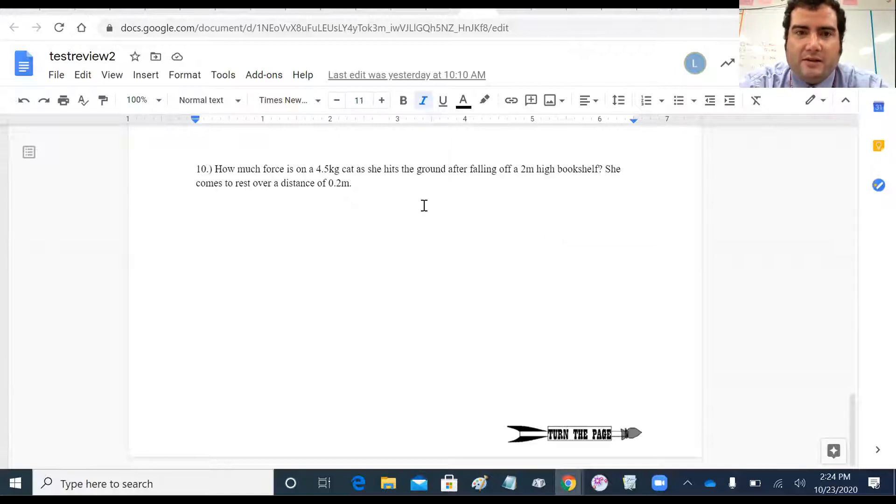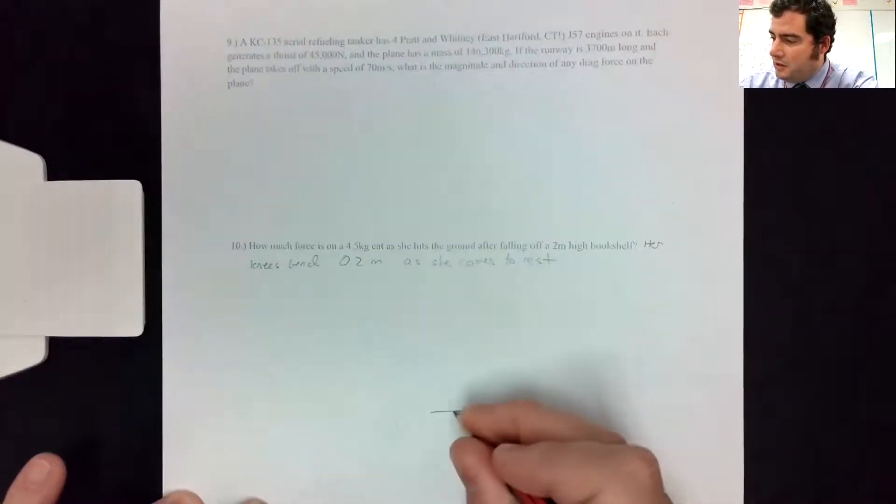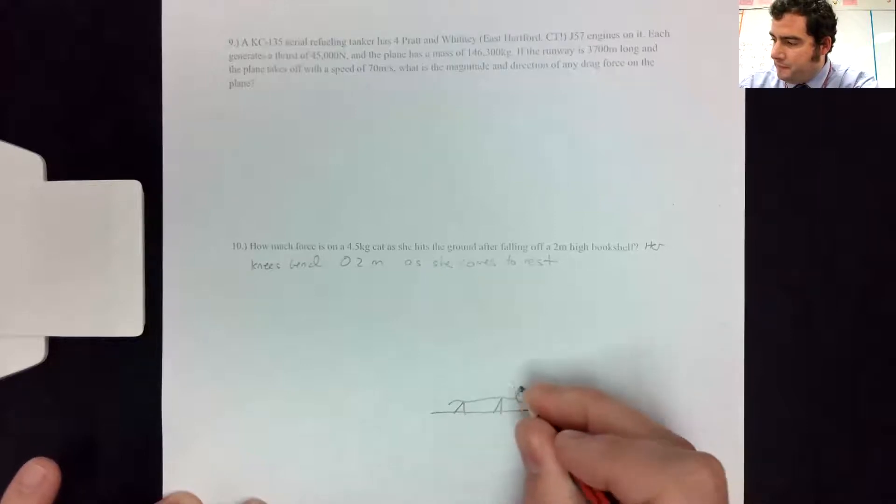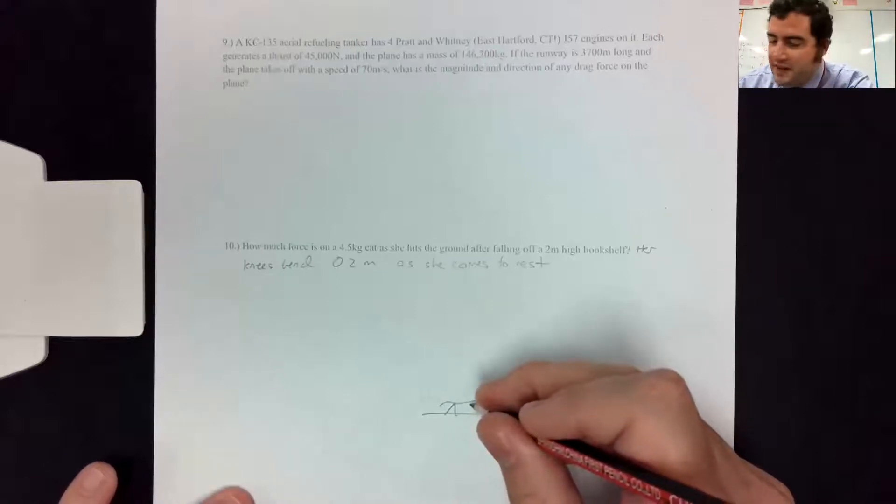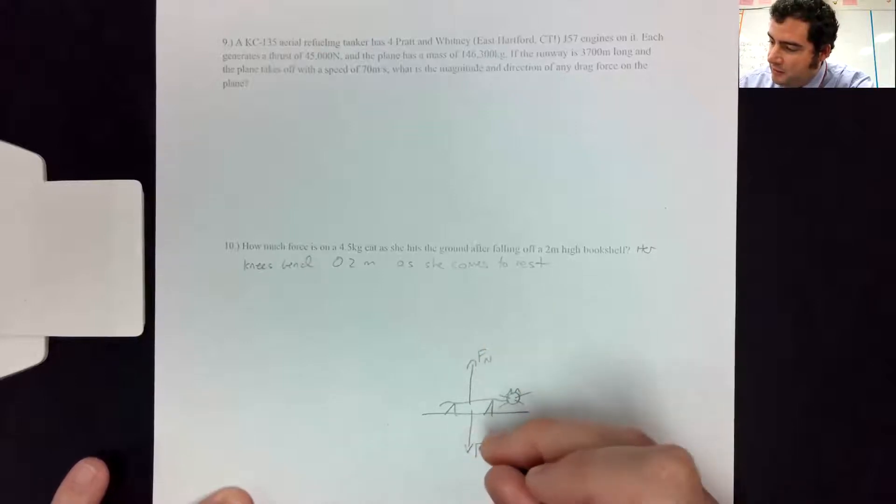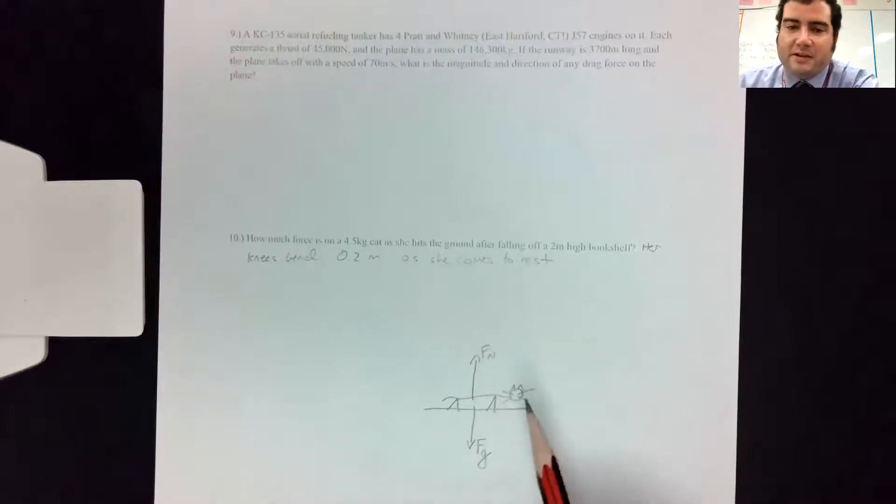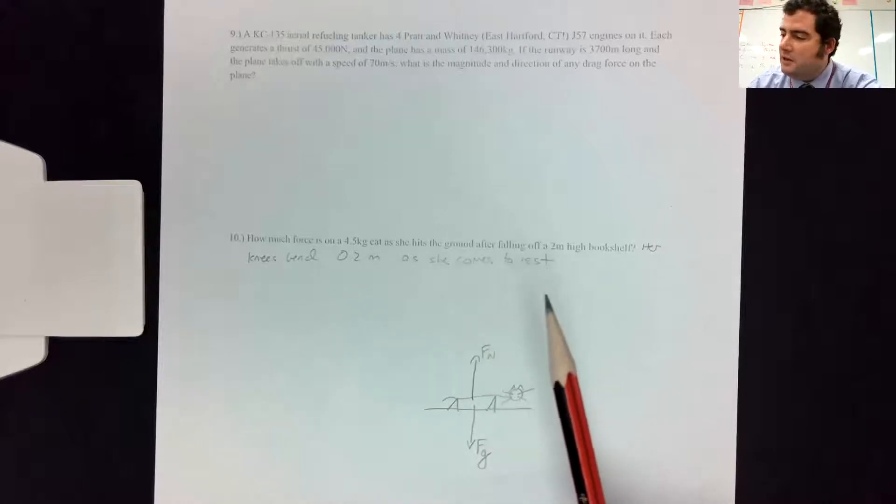Because ultimately what I care about in this problem is I care about this period of time when the cat is making contact with the ground. So if I draw myself a cat, look at that, awesome cat. The forces on the cat that matter are the normal force and gravity. So I care about this point when the cat has hit the ground and when it's coming to rest. Typically knees bend when we come to rest and hit the ground. I want to know about the acceleration and forces during that time period.